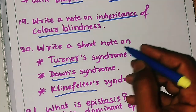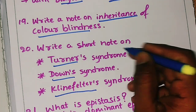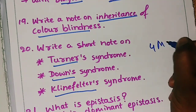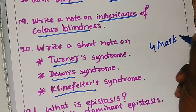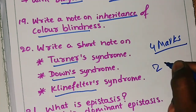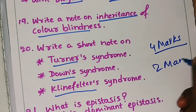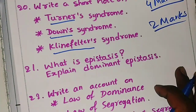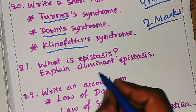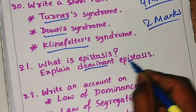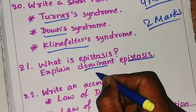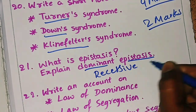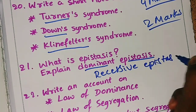Prepare all three syndromes — Turner syndrome, Down syndrome, and Klinefelter syndrome. They can be asked in four marks, and if not, they will definitely be asked in two marks, so you can score easily. The twenty-first question is: what is epistasis — explain dominant epistasis and recessive epistasis. Prepare both for your exam.